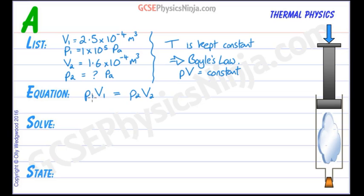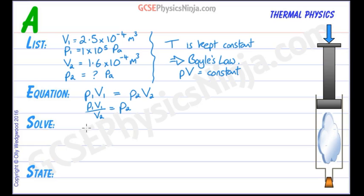It's a good idea to rearrange this equation. Because we're looking for P2, let's divide both sides by V2. So we can say that P2 equals P1V1 divided by V2. Now all we need to do is substitute the numbers in.